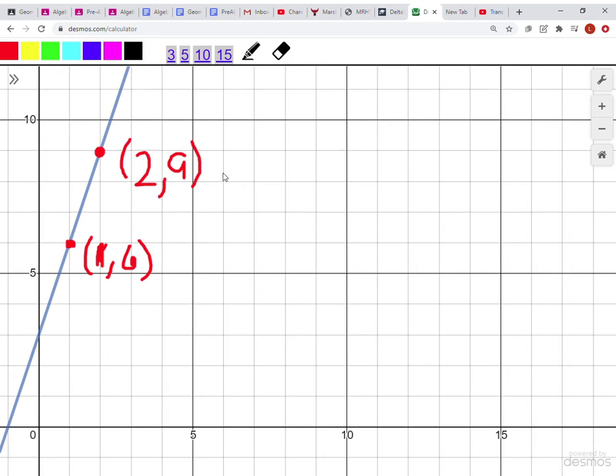Again, you can choose any two coordinates on the line. You'll get the same answer regardless. What you want to do with those coordinates is actually label them. Generally in mathematics, anytime you're using coordinates, it's a good idea to label one coordinate as x1, y1 and the other coordinate as x2, y2. The ones represent our first point or starting point, and then the twos represent our ending point or second point. It helps keep our numbers straight and helps it line up with our equation.